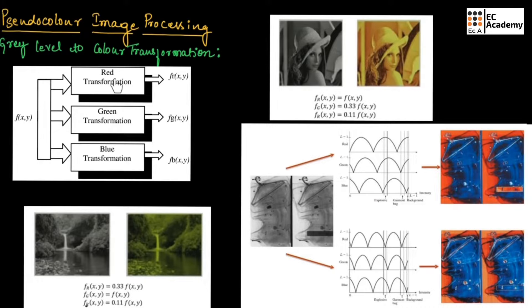This block diagram shows the gray level to color transformation. Here, as you can see, we are considering a grayscale image. This grayscale image is passed through three transformations: red transformation, green transformation, and blue transformation, to obtain the red plane, green plane, and blue plane.